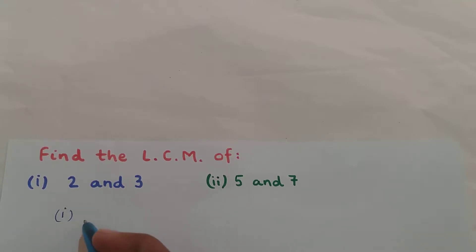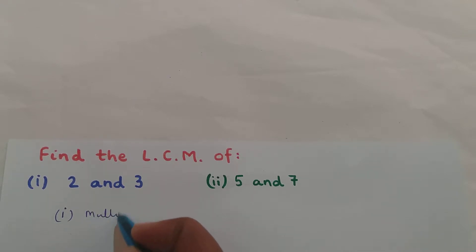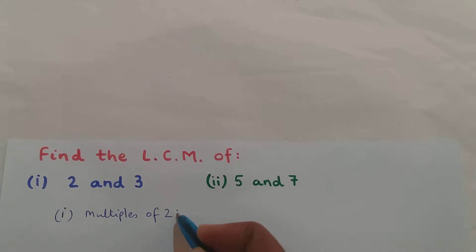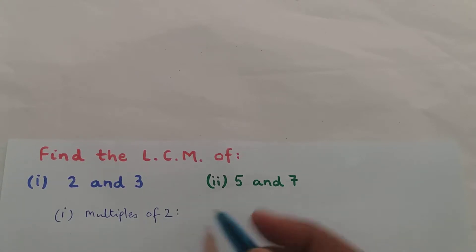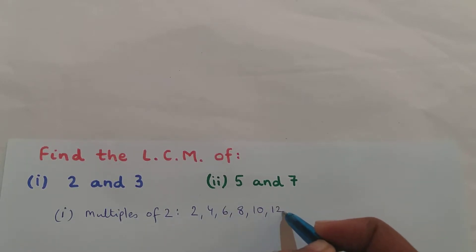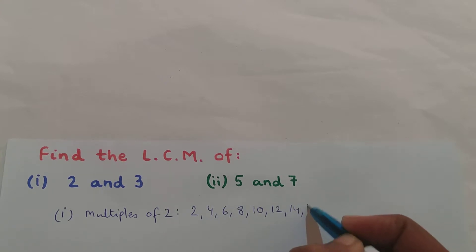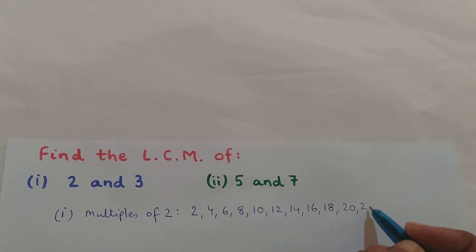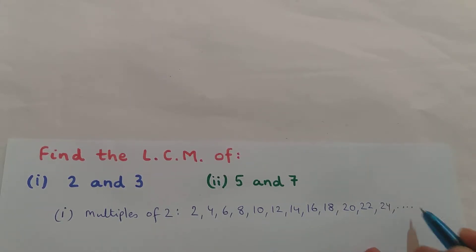So first I will write down the multiples of 2. The multiples of 2 are: 2, 4, 6, 8, 10, 12, 14, 16, 18, 20, 22, 24, and so on. So I have written down a few multiples of 2.